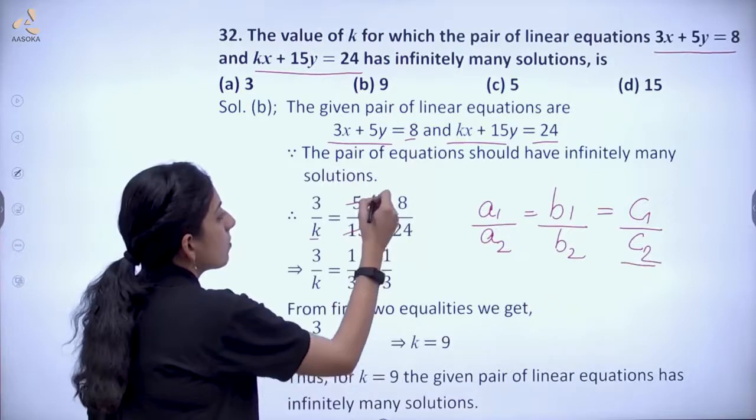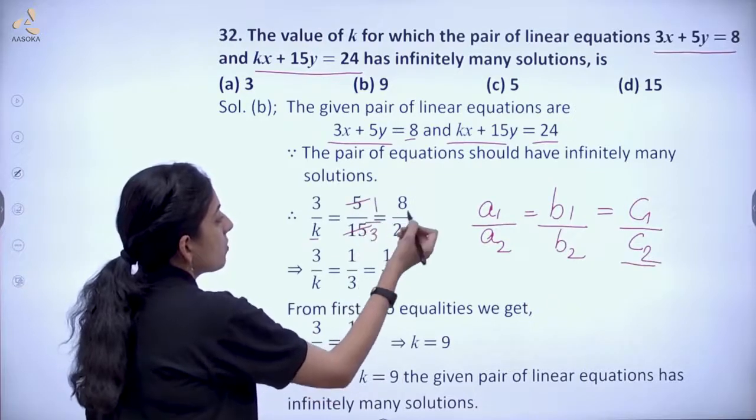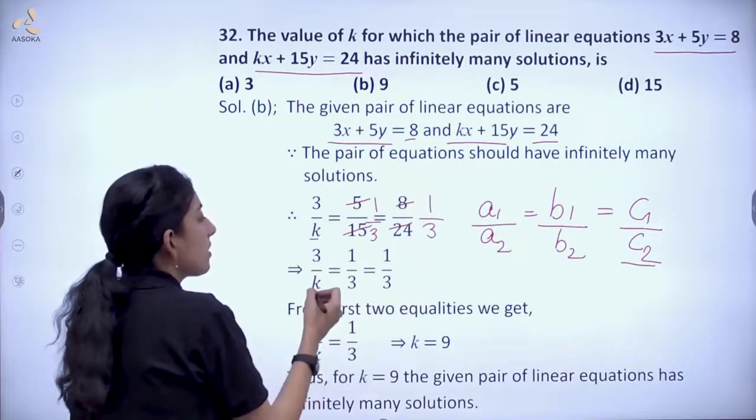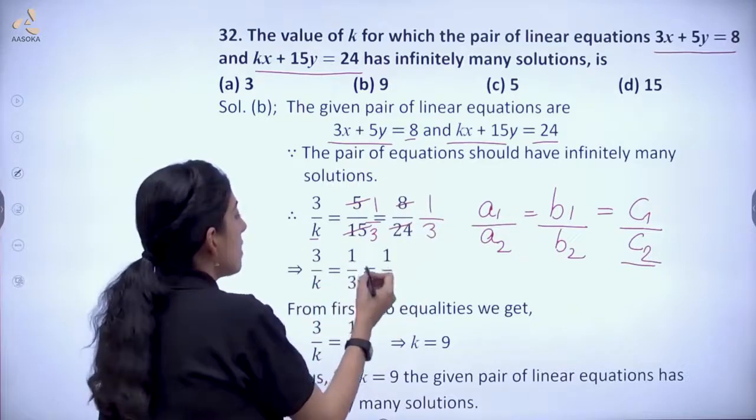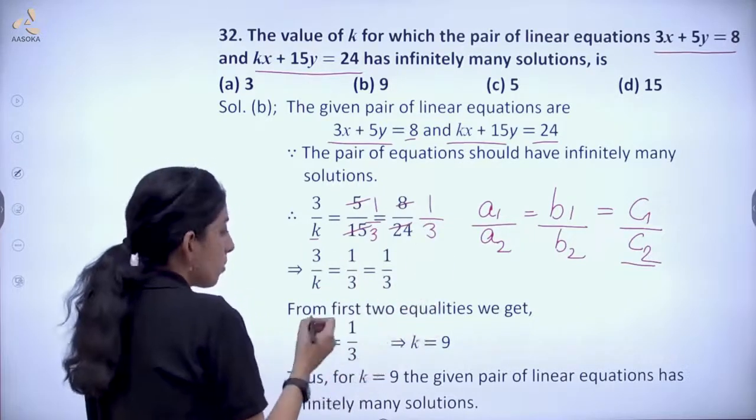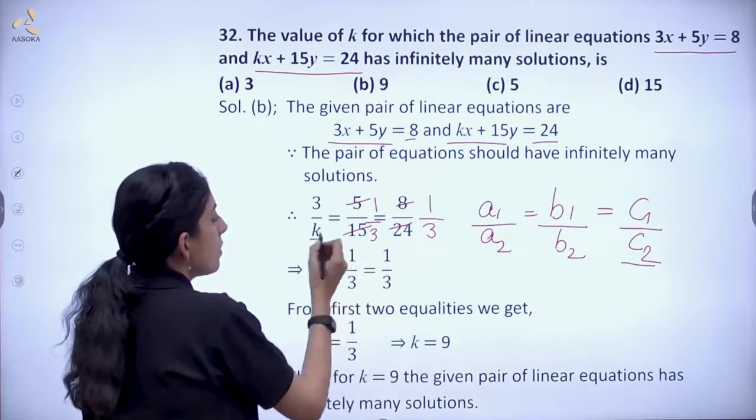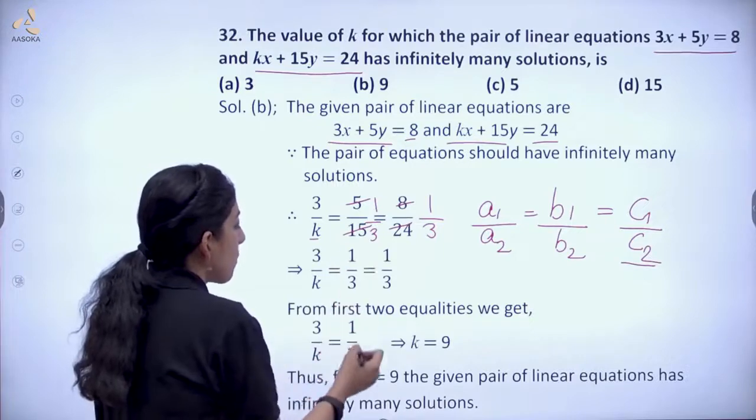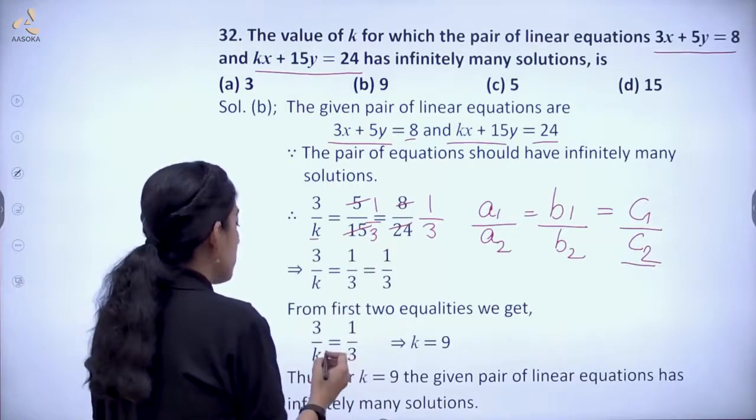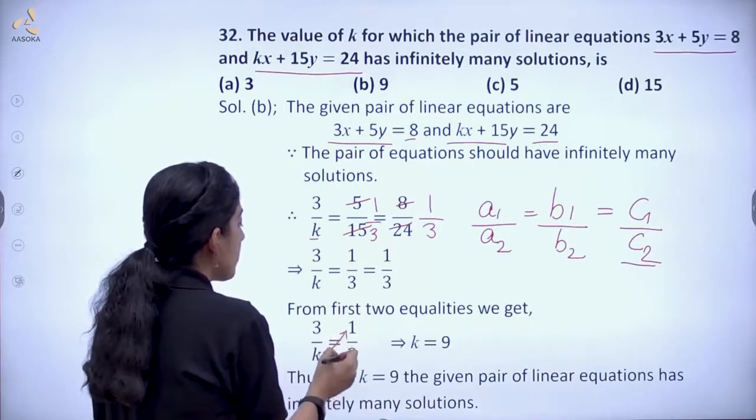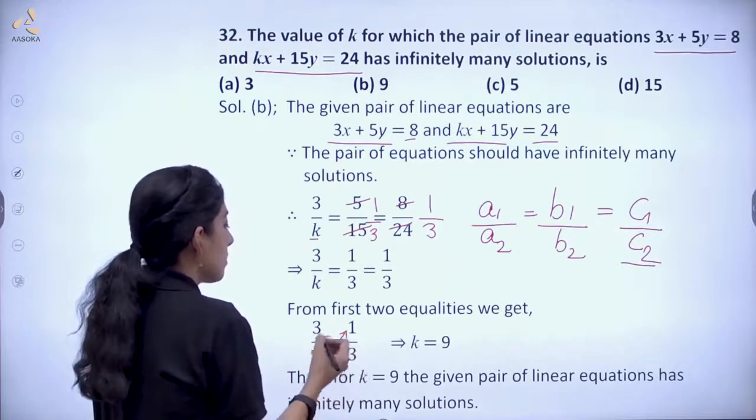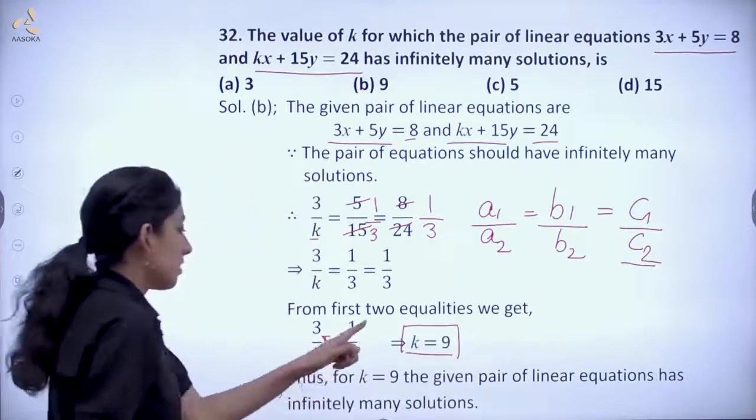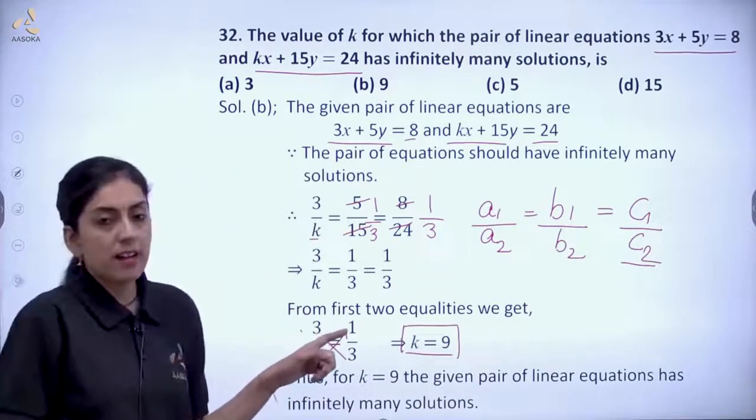Now this will turn out to be 1 upon 3, and this also 1 upon 3. So 3 upon k is equal to 1 upon 3 is equal to 1 upon 3. We are taking the first two equalities. So 3 upon k and 1 upon 3, when we cross multiply these equations, then we will get k is equal to 9, k is equal to 3 into 3, that is equal to 9.